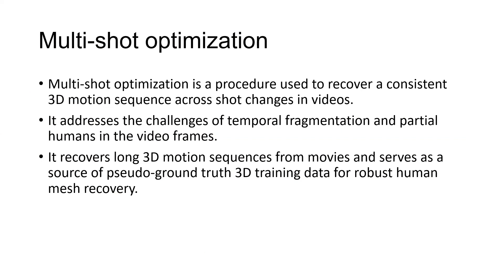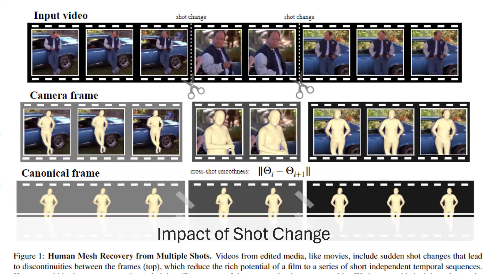Multi-shot optimization is a procedure used to recover a consistent 3D motion sequence across shot changes in movies. It addresses the challenge of temporal fragmentation and partial human visibility, as seen in certain shots. It recovers long 3D motion sequences from movies and serves as a source of pseudo ground truth and 3D training data. Specifically, this optimization method creates pseudo ground truth for all scenes, creating more detailed ground truth which helps the model to be far more optimized for general situations.